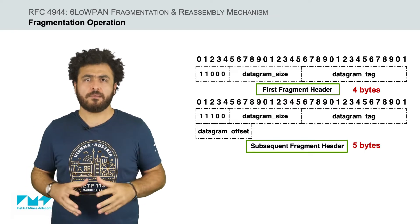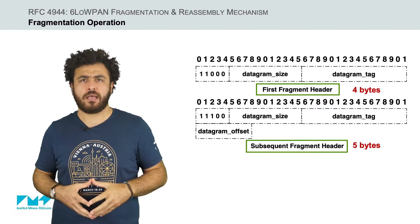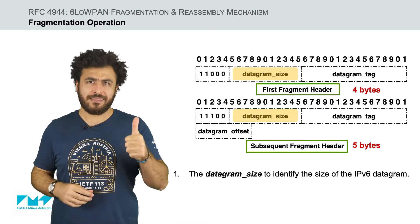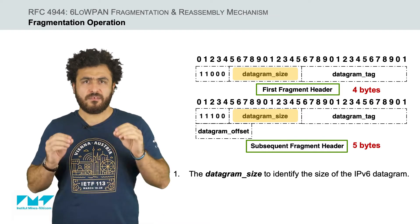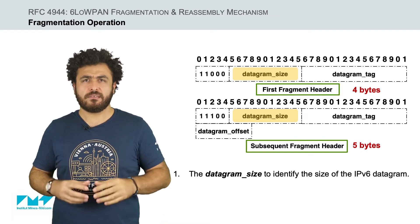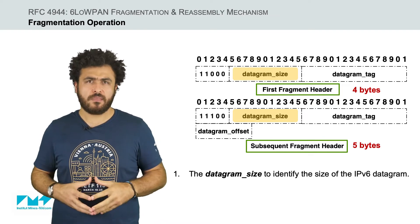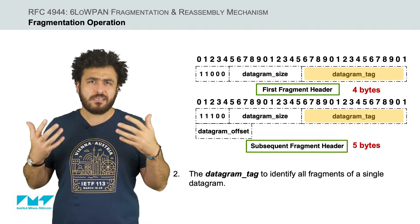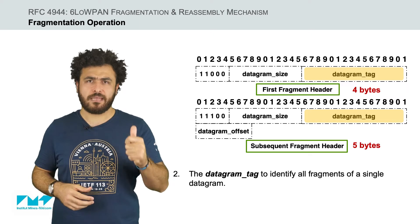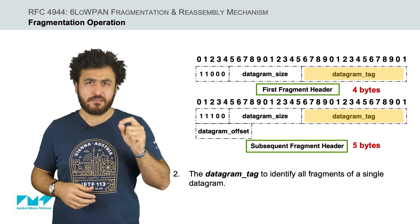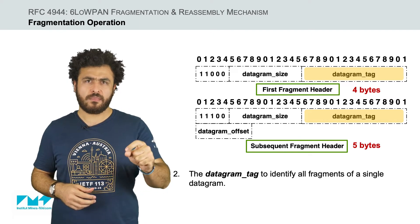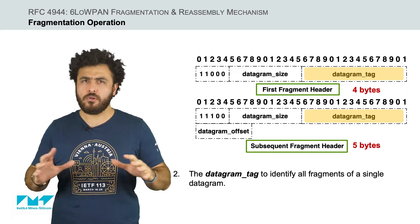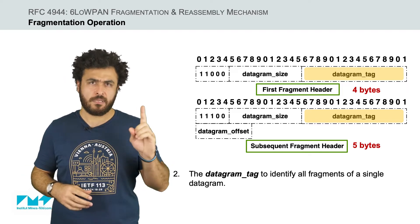More specifically, the fragment headers come with the following fields. First, we have the datagram size. This first field is employed to encode the size of the original IPv6 datagram. The second field is the datagram tag. This field, in conjunction with the MAC source address, is employed to identify all fragments of a single IPv6 datagram.